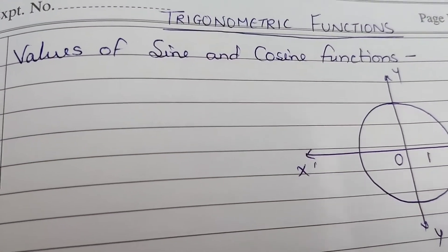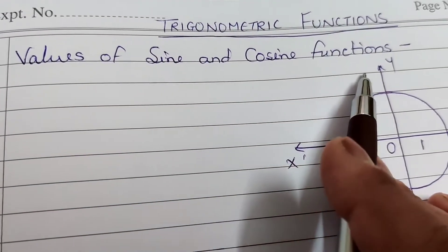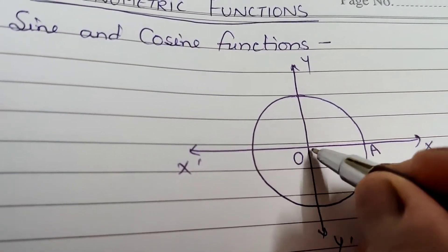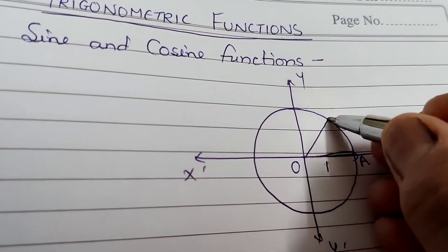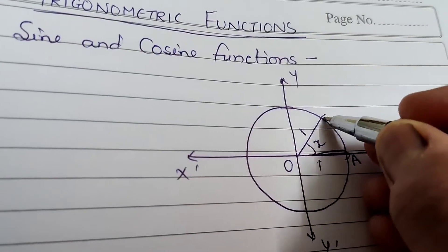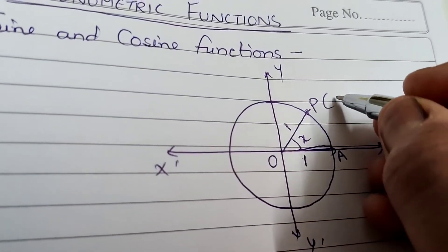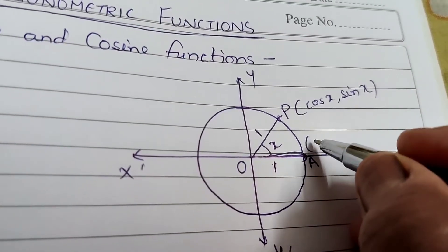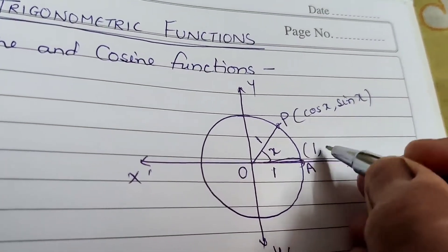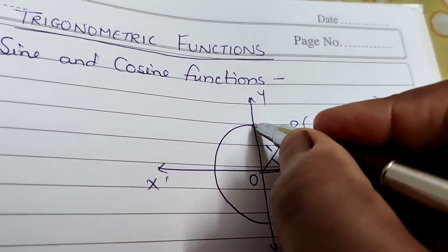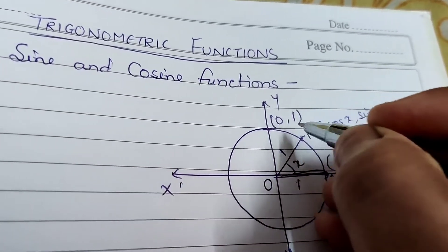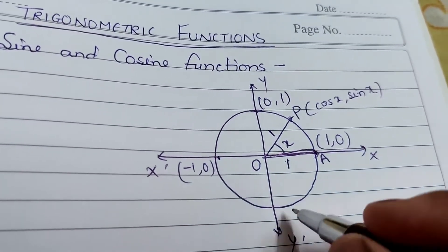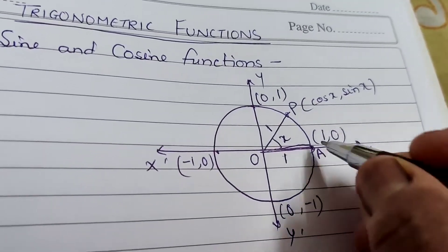Today's topic is trigonometric functions. First, we find the values of sine and cosine functions. Here is a circle with radius 1. This is the initial side, and it moves through an angle x. This is the point P on the unit circle, with coordinates (cos x, sin x). Point A has coordinates (1, 0), and the other key points are (0, 1), (-1, 0), and (0, -1).